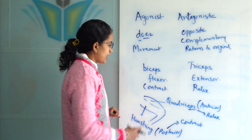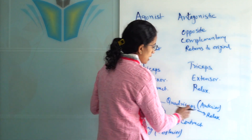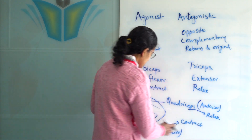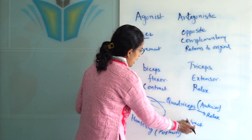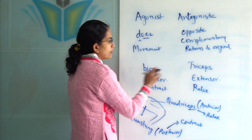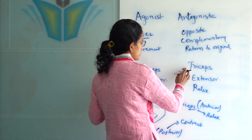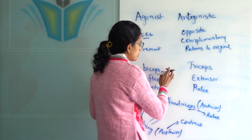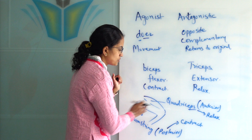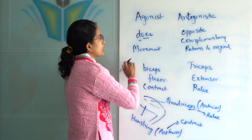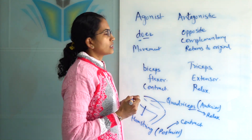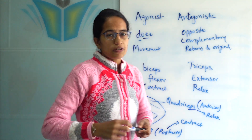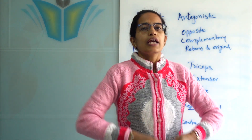So when there is a hip flexion, the quadriceps would relax but the hamstrings would contract — similar to the biceps and the triceps. So biceps, triceps, hamstring, and quadriceps are common examples of agonist and antagonistic muscles.